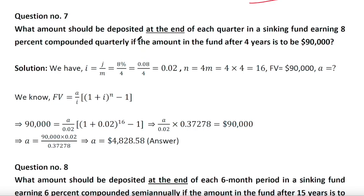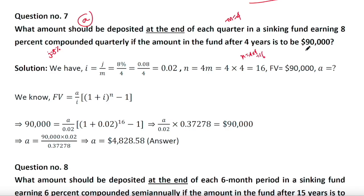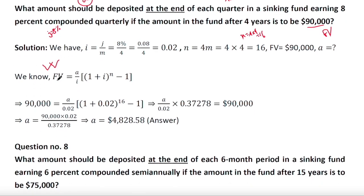Another problem: What amount should be deposited at the end of each quarter in a sinking fund earning 8% compounded quarterly, if the amount in the fund after 4 years is to reach a given future value? Here m = 4, j = 8%, and n = 4 × 4 = 16. You need to calculate A, the payment of each installment, using the future value formula as before.